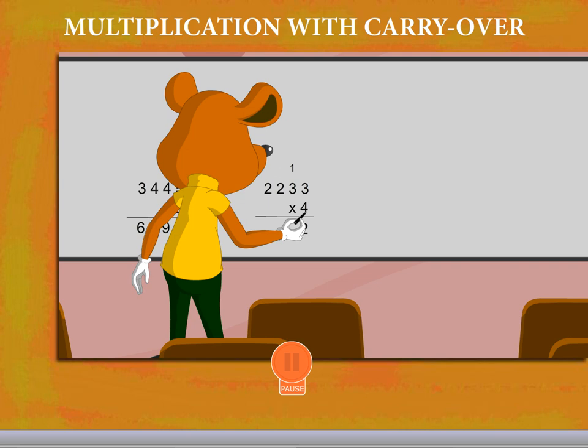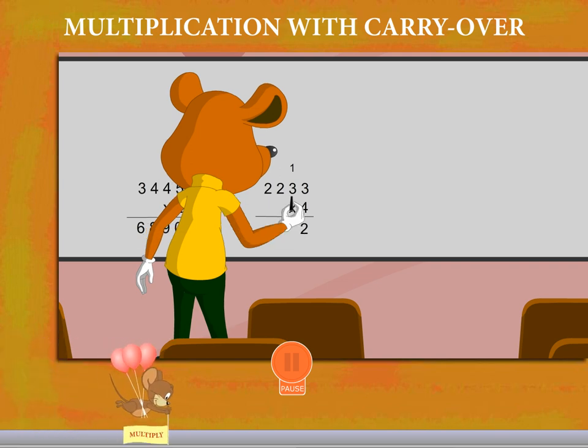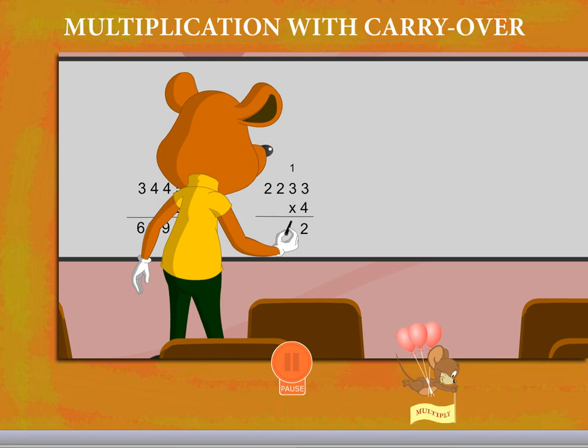Again, 4 multiplied by 3 is 12. And adding the carryover makes 13. He now writes 3 and carries 1.